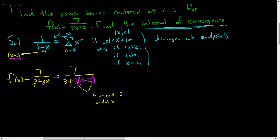If that didn't make sense, just rewind it. Let's keep going. You'll notice that there's a 1 here, but we have an 8. So let's pull it out. So this is 7 over 8 times 1 over, we factored out an 8. So here we get 1 plus, we factored out an 8 from the 3, so we get 3 over 8, x minus 2. Almost there.